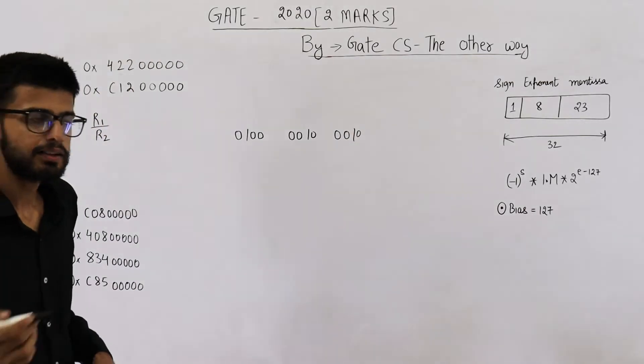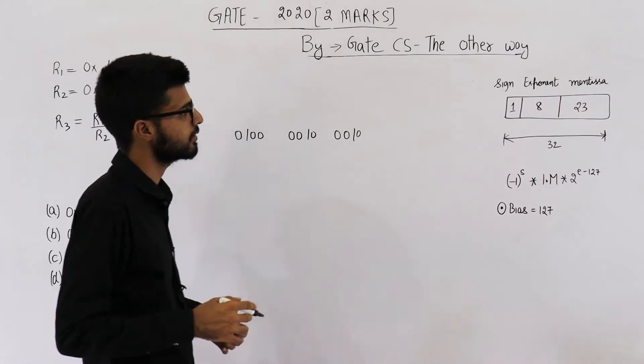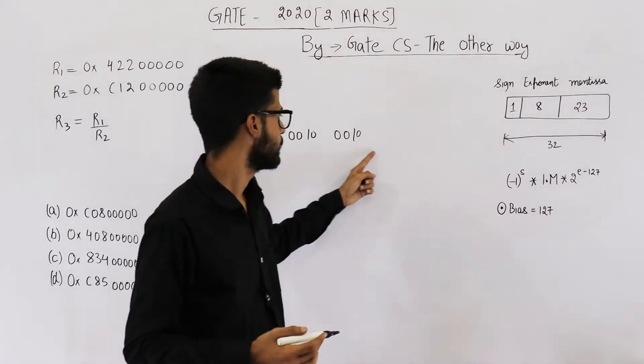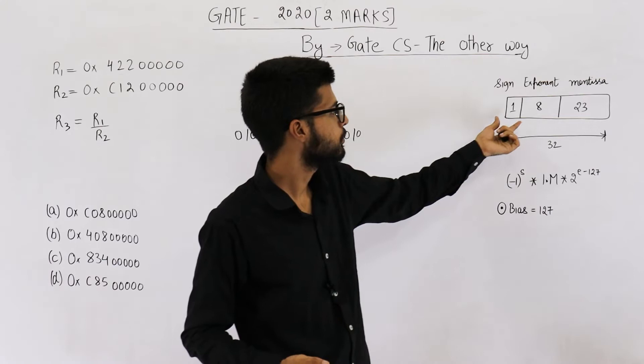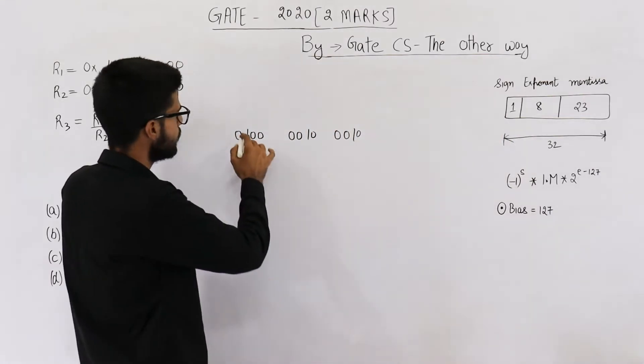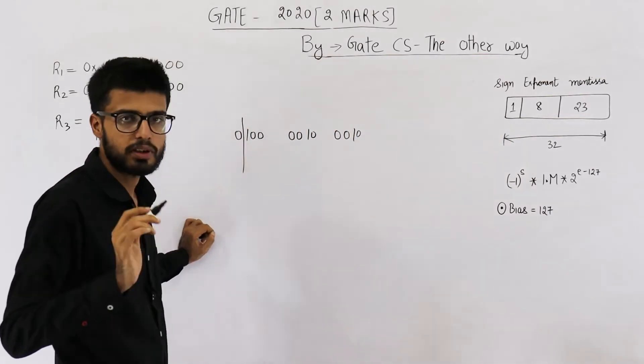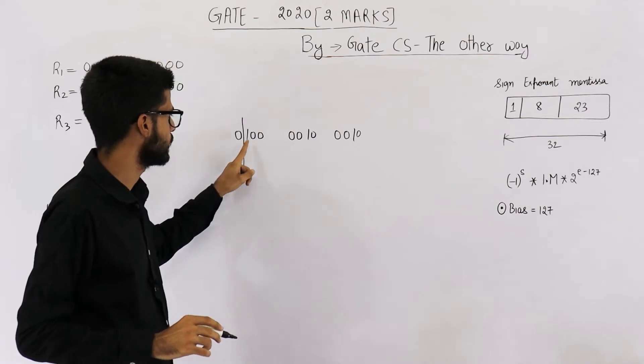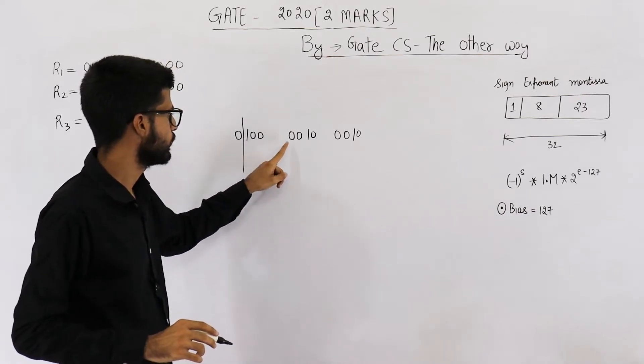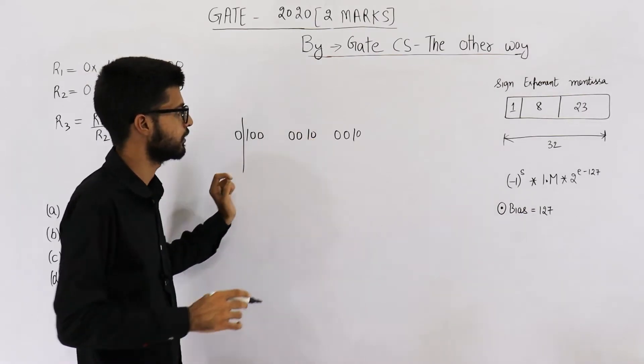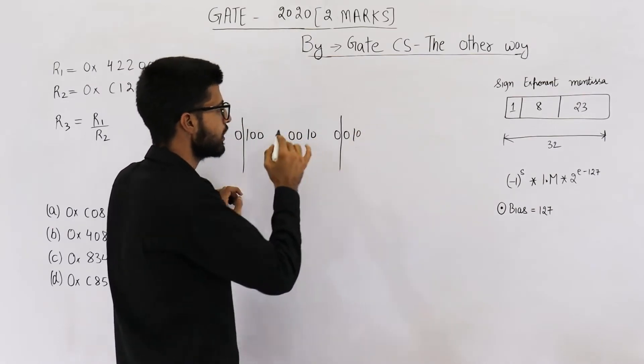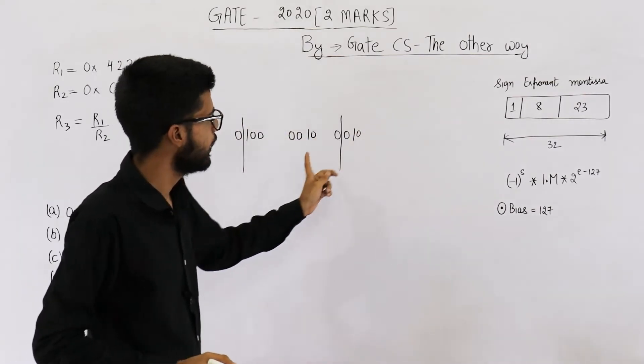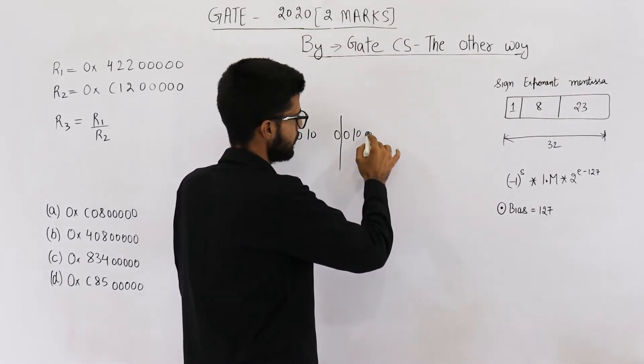Let us try to see what is the actual number saved by these bits. First bit is the sign, so this is a positive number because sign bit is zero. Then one, two, three, four, five, six, seven, eight - all of these bits are exponent, and these are the mantissa bits.